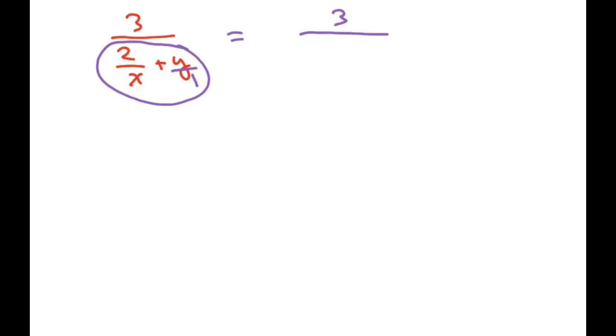my common denominator is x. So I'm going to put an x here, and you just do the butterfly thing. You do 1 times 2 is 2, plus x times y is xy.